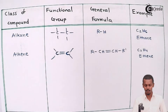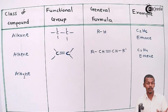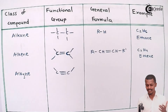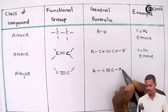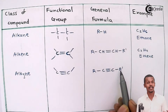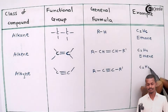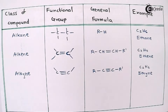The next class is alkynes. An alkyne is known for its carbon-carbon triple bond present in the organic compound, so the functional group is C≡C. This gives a linear shape due to SP hybridization. The general formula is RC≡CR', where R' can be H or another alkyl group, and the two groups can be the same or different. A simple example is C2H2, which is ethyne.